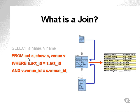What I'm actually joining are the ACT, SHOW, and VENUE tables, not just ACT and VENUE, because according to my entity relationship diagram structure, the ACT and VENUE tables are joined together through a many-to-many join resolution type table called the SHOW table. The blue arrows indicate the joins into the SHOW table, and the red arrow indicates the final join of the three tables, giving you venue names and act names.